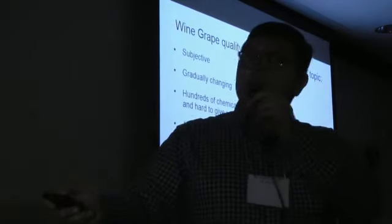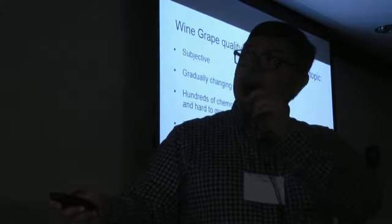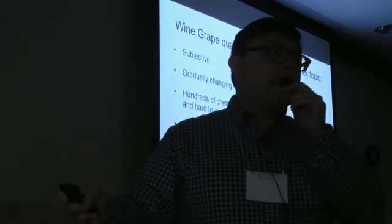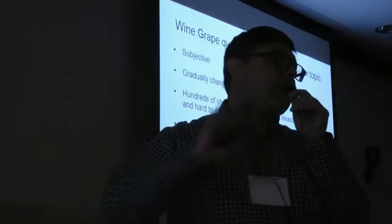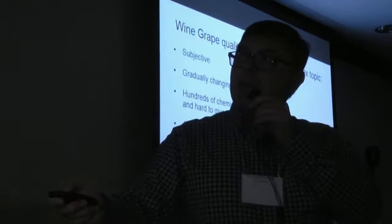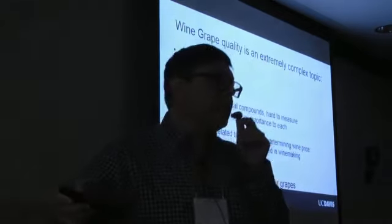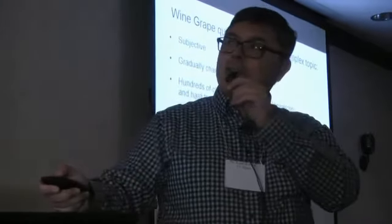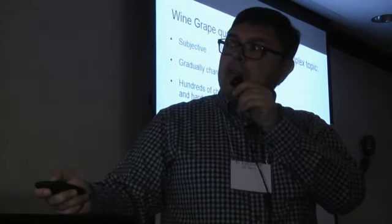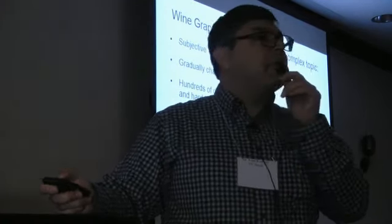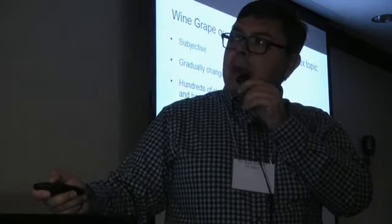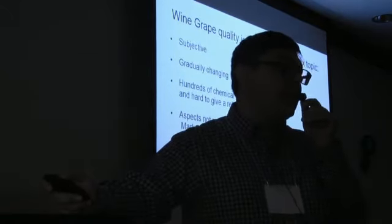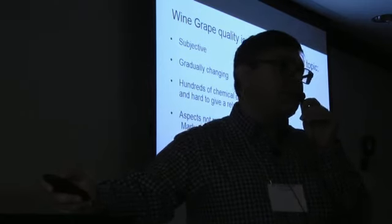Wine grape quality is an extremely complex and subjective topic that changes gradually over the years. There are hundreds of chemical compounds—we monitor about 160 different compounds at our lab in Oakville. It's almost impossible to assign relative importance to each, because every winemaker or grower is after something different. Market niche and investment in winemaking also affect pricing decisions and how climate change might affect quality parameters in the long run.